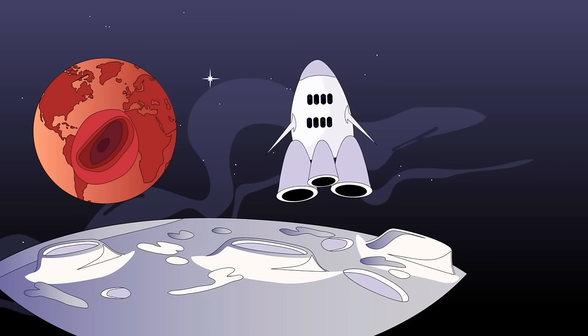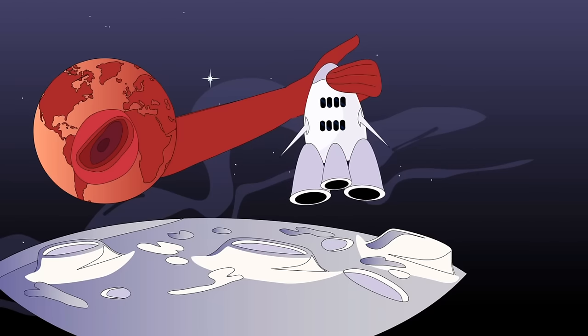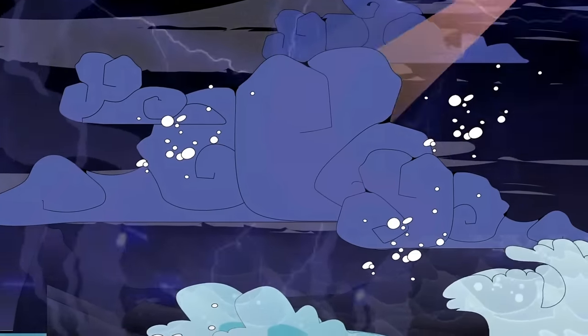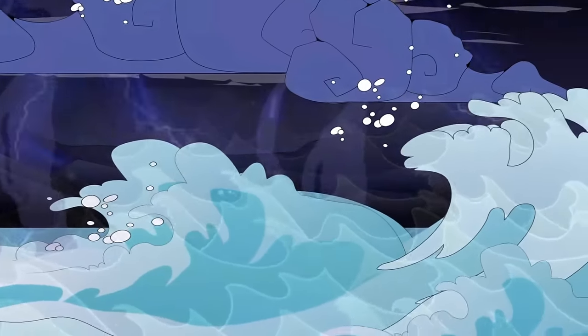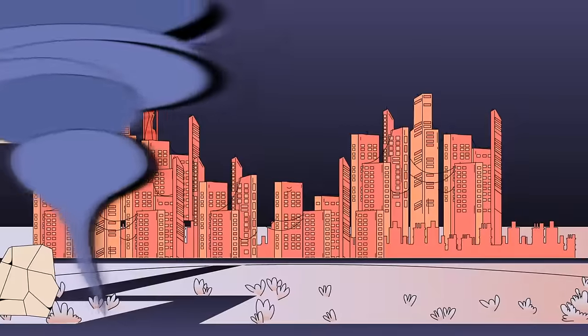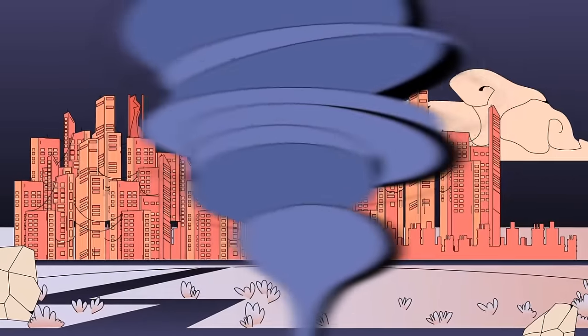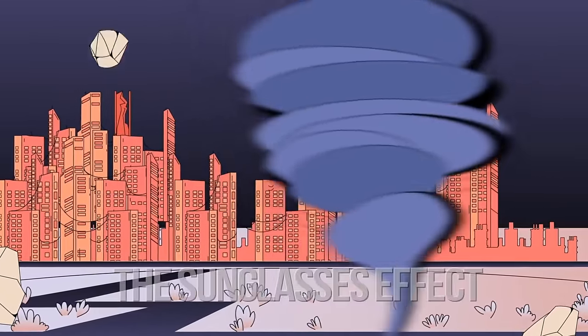This process will take years, but it'll still be too fast for people to prepare. There will be two ways to deal with this global problem. One of them is to colonize the moon or another planet, for example, Mars. But it's an incredibly long process, and the storm will conquer the entire planet before the first spacecraft with people leaves Earth. Or scientists may try to stop the hurricane.